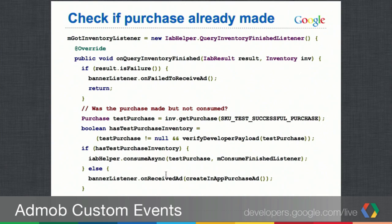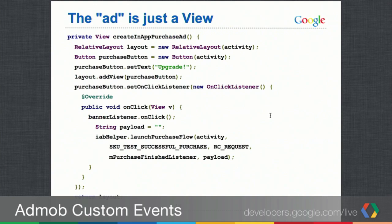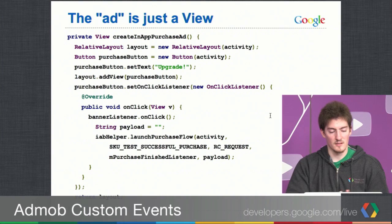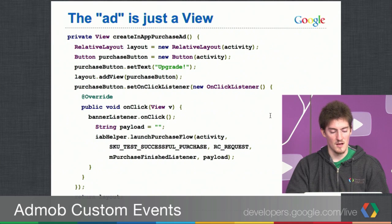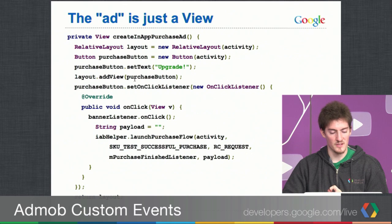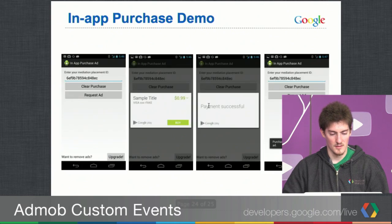The 'ad' is simply a custom view — a RelativeLayout with a TextView saying 'Do you want to upgrade?' on the left and an 'Upgrade' button on the right. When the button is clicked, we call IabHelper.launchPurchaseFlow to start the purchase.